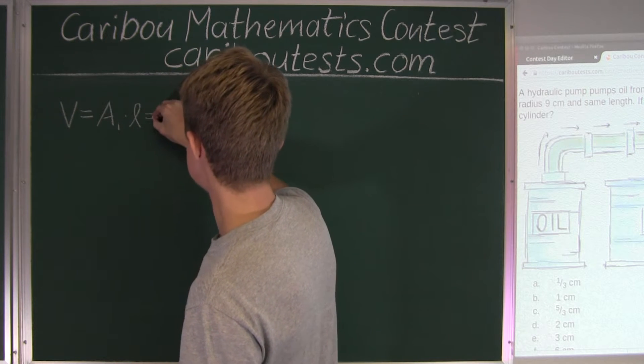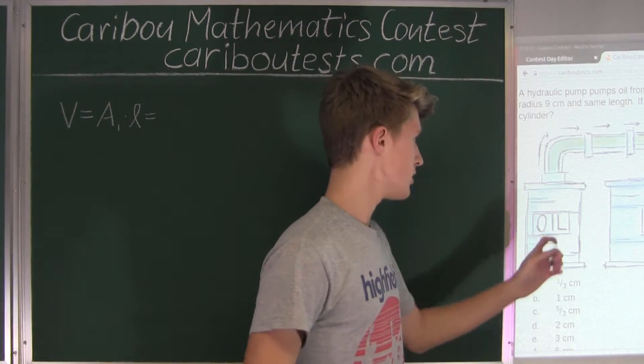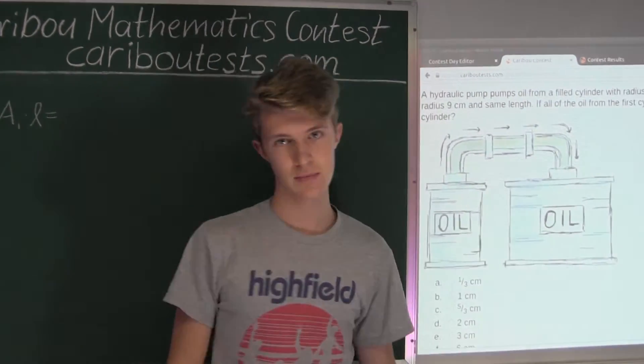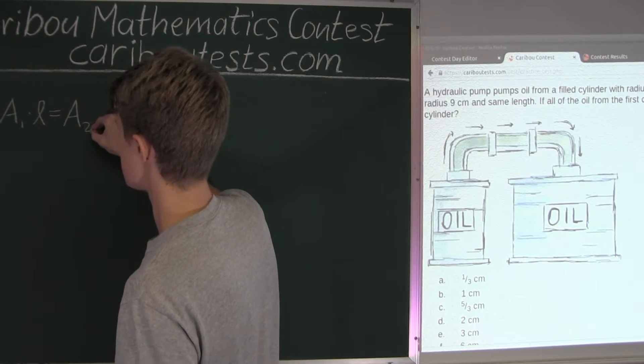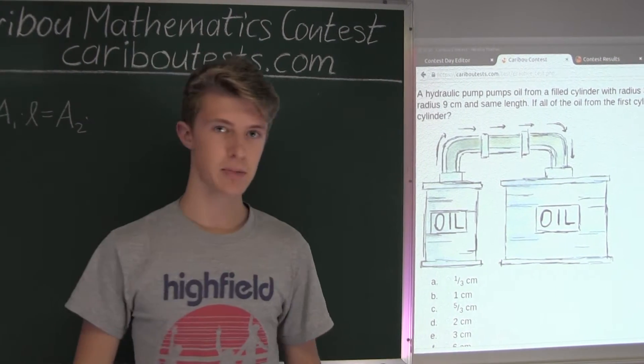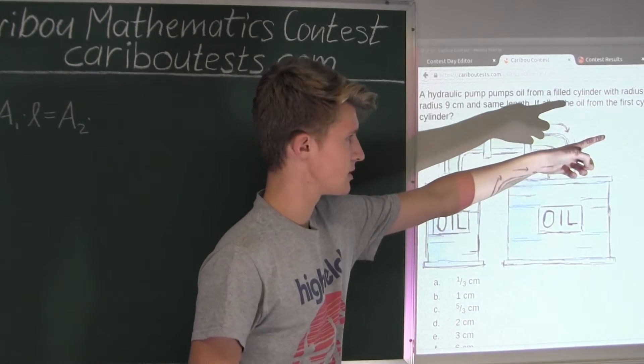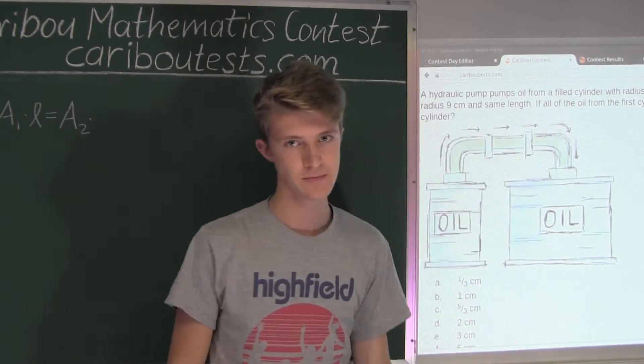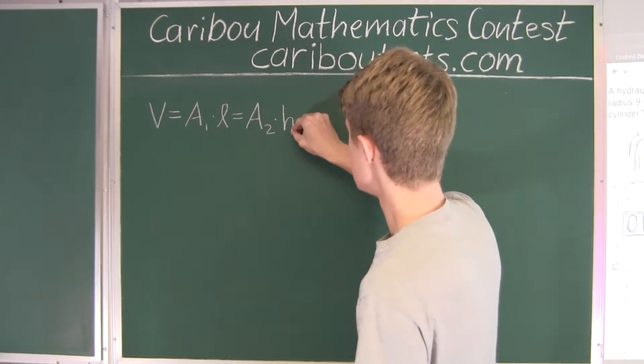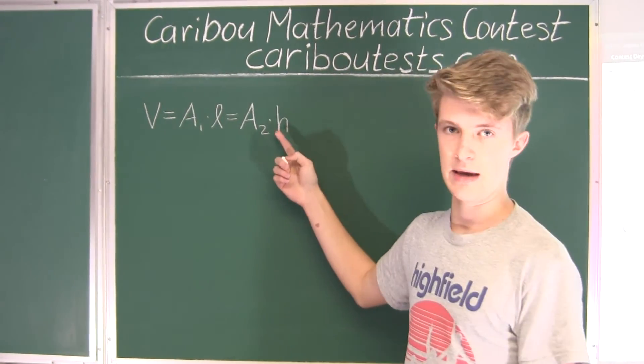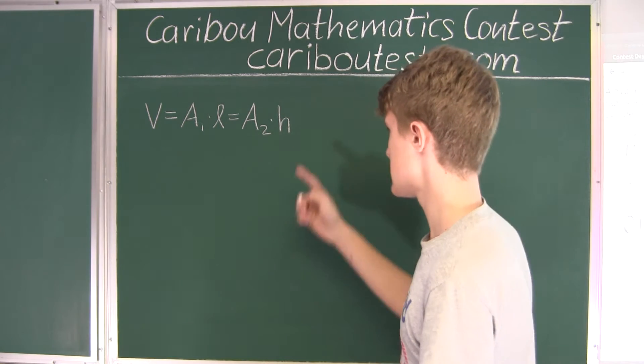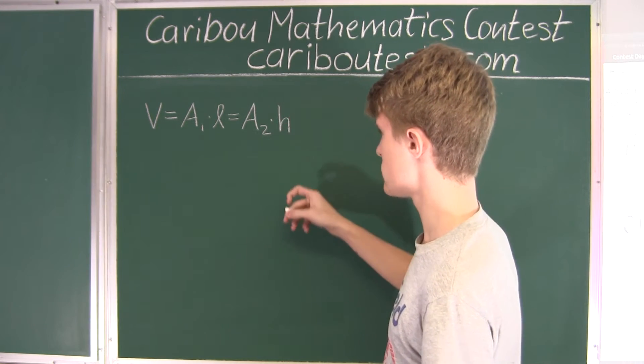And that is equal to the area of the circle of the second cylinder, which we'll call A₂. And that is multiplied by the filling height, because that's what we want to find out for the second cylinder. So we'll call that H. Okay, so now what we want to find out is H, which is the filling height of the second cylinder. So we want H on one side.